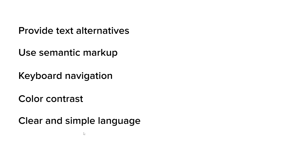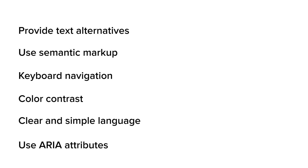You also want to use clear and simple language to make your content easy to understand for all users, including those with cognitive disabilities. And you want to use ARIA attributes, which help provide additional information about the functionality and purpose of your web components. Regularly testing your website's accessibility with screen readers, keyboard-only navigation and assistive technologies can help ensure that your site is accessible to all users. By implementing these best practices, you can make your website more accessible and inclusive for all users, regardless of their abilities or disabilities.